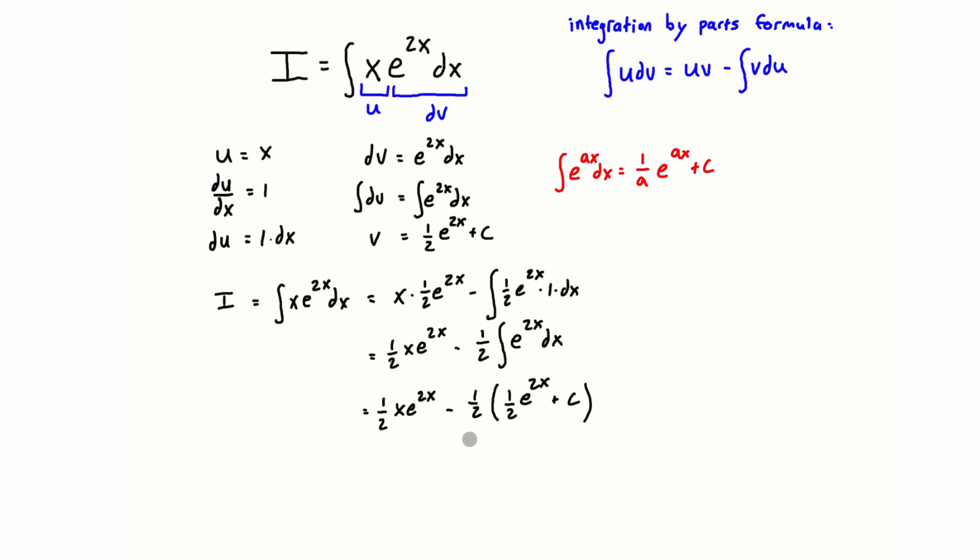But anyways, let's distribute this in a little bit. So we actually have, we can simplify, we have 1 half x e to the 2x minus 1 over 4 e to the 2x plus c.